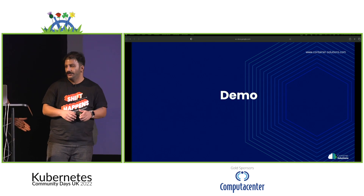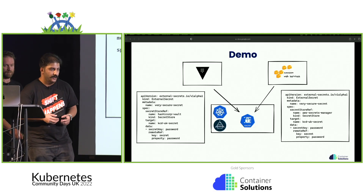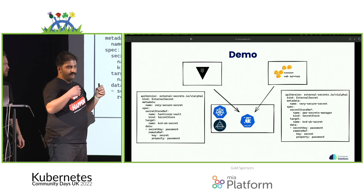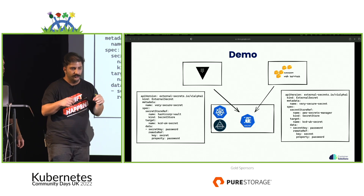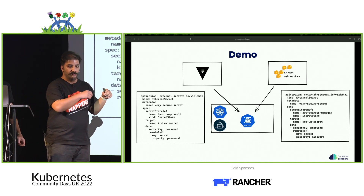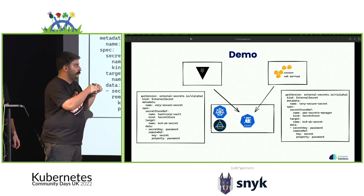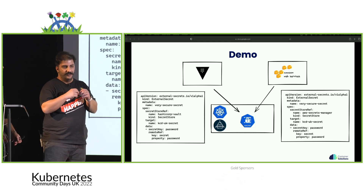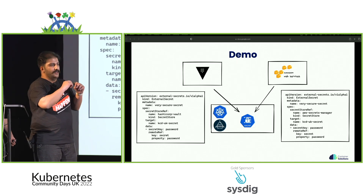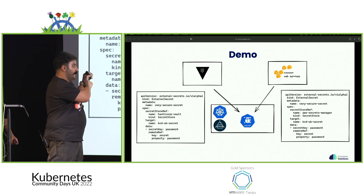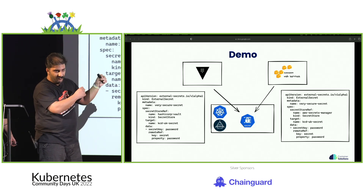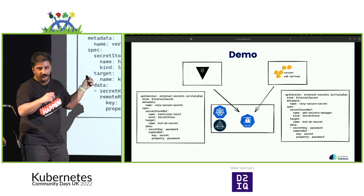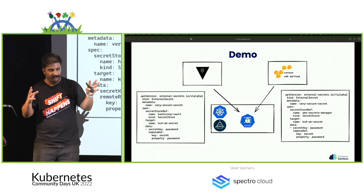We have a demo to show you the key feature, which is fetching secrets from different secret management providers. I have a tiny Minikube cluster and I've installed External Secrets Operator on top of that cluster. What I'm going to do is fetch a secret from HashiCorp Vault — I've added a key-value secret there — and then I'm going to change some values in the YAML file, apply it again, and fetch a different secret from AWS to see how it works.